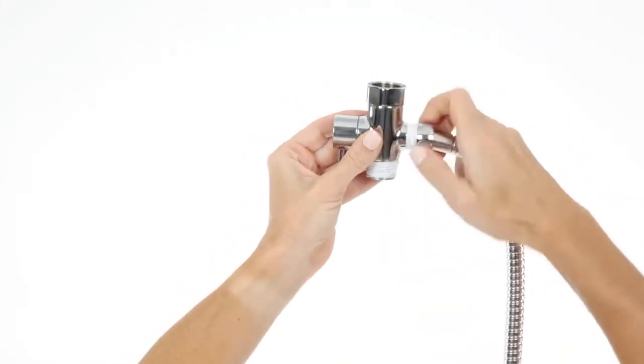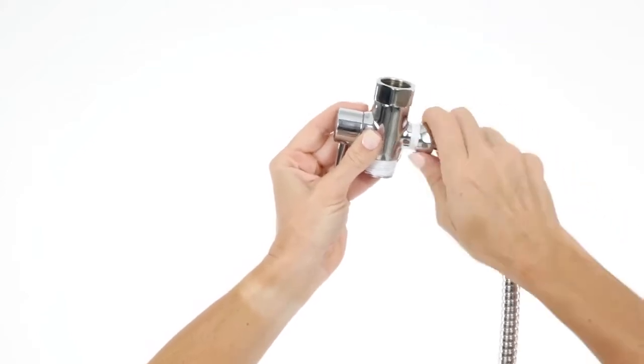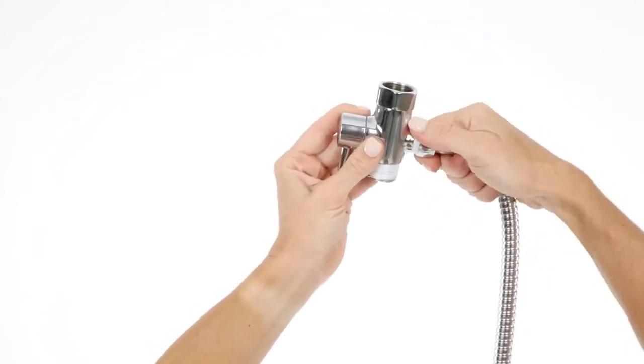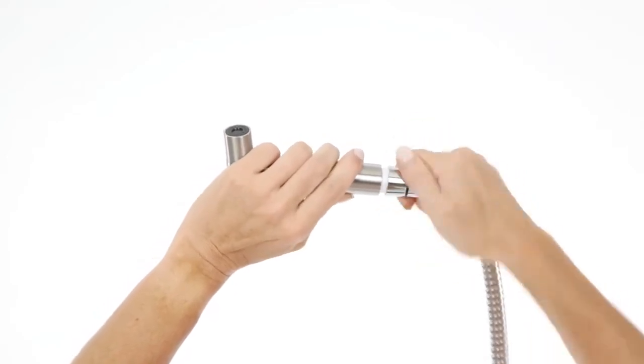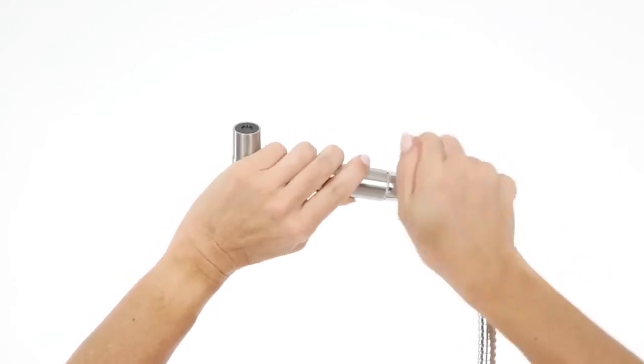Attach the short rounded connector on the bidet hose to the smallest end of the T-valve and the long angled connector to the sprayer head. Be sure not to over tighten the connections.